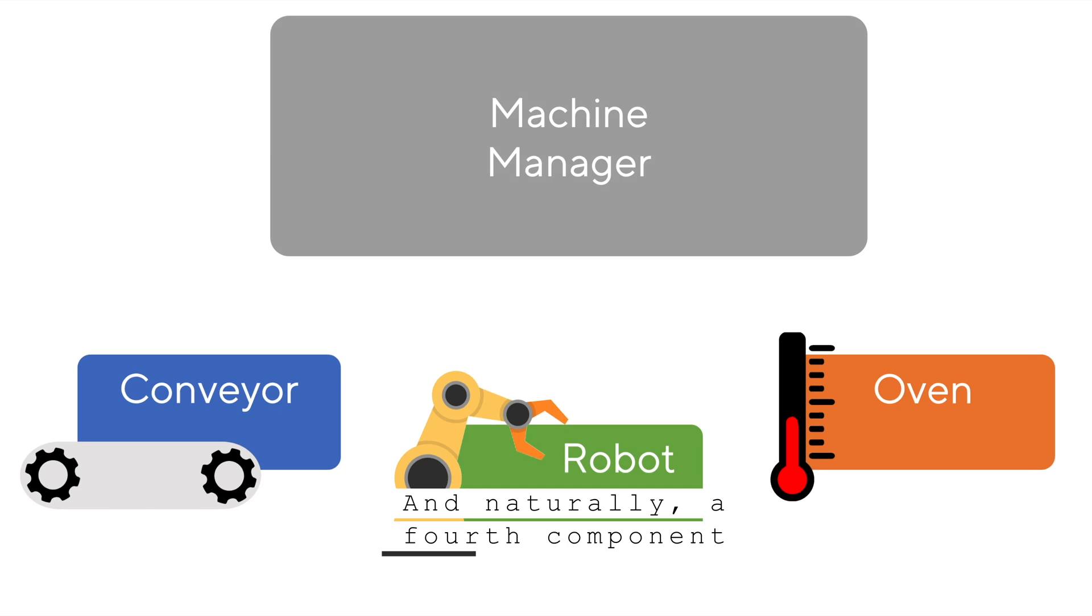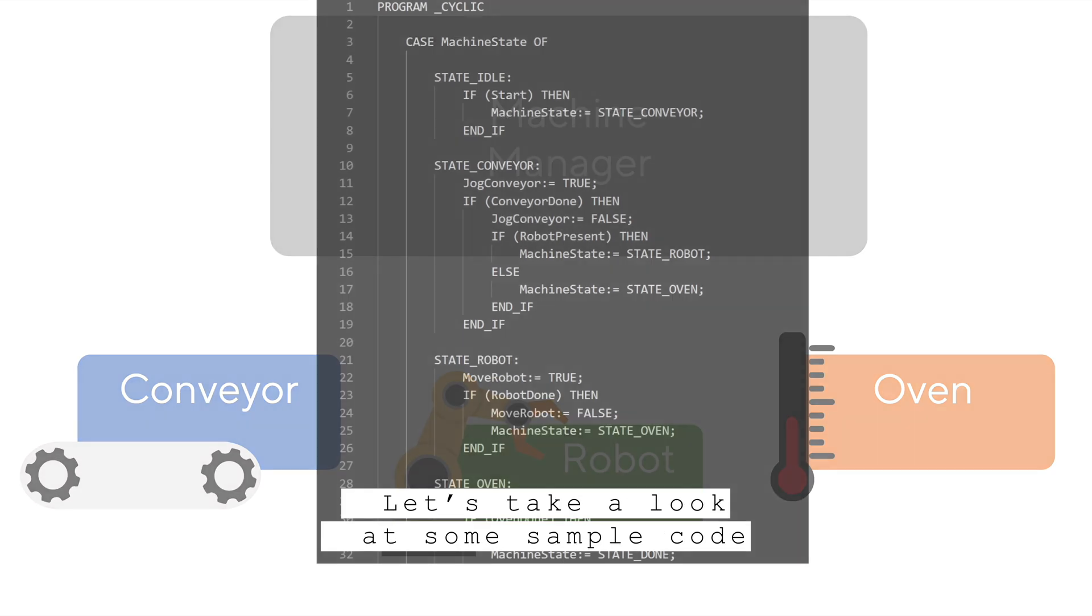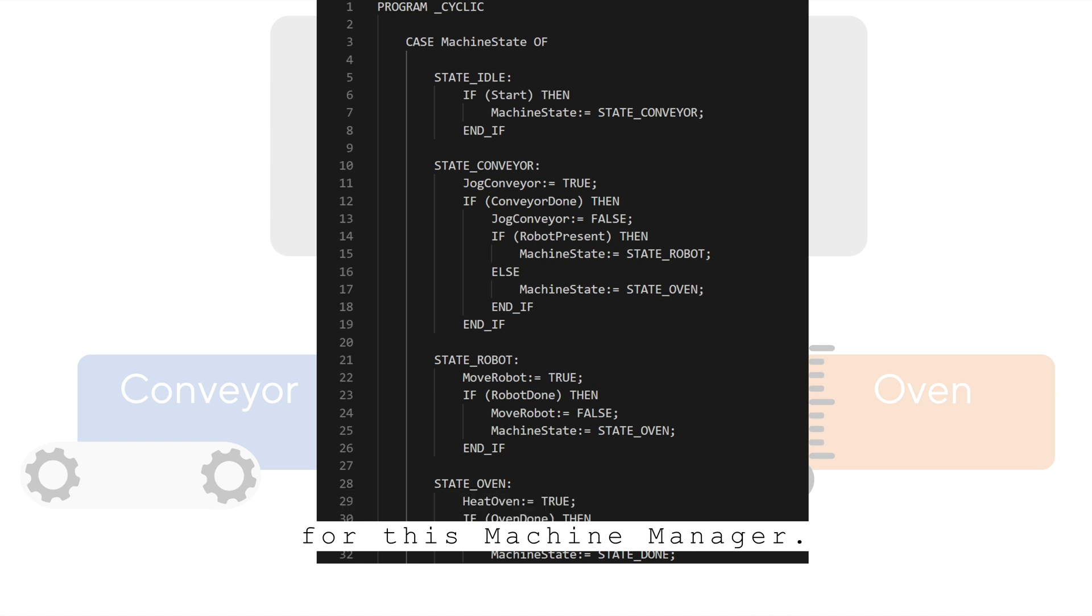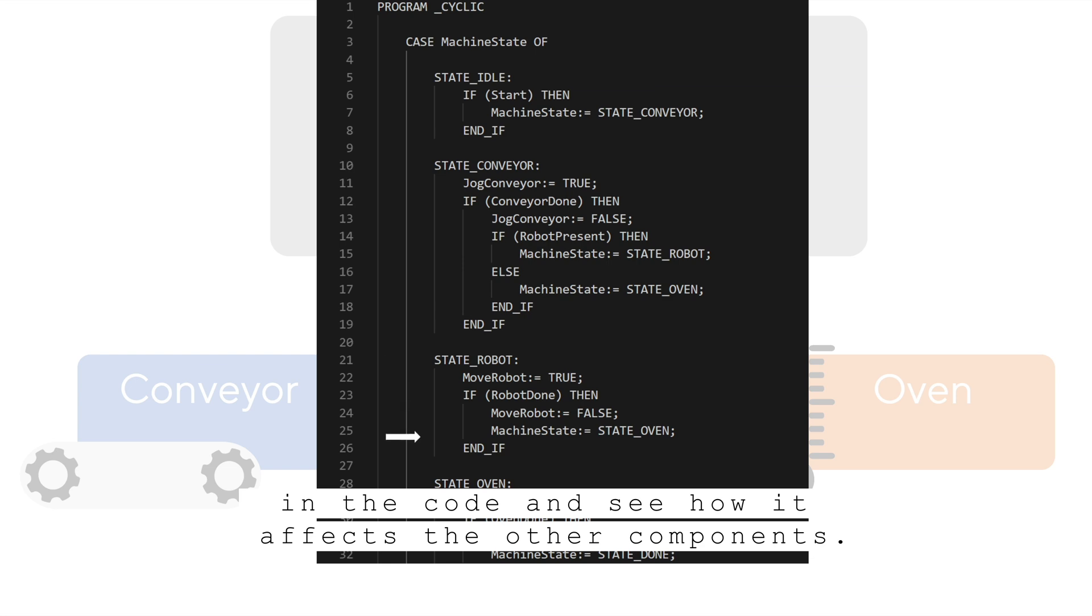And naturally, a fourth component is necessary to coordinate them. We'll call this a machine manager. Let's take a look at some sample code for this machine manager. We'll walk through each state in the code and see how it affects the other components.